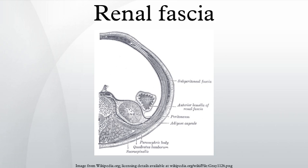Superior attachment: the anterior and posterior layers fuse at the upper pole of the kidney and then split to enclose the adrenal gland. At the upper part of the adrenal gland they again fuse to form the suspensory ligament of the adrenal gland and fuse with the diaphragmatic fascia.